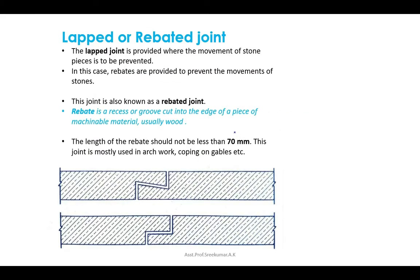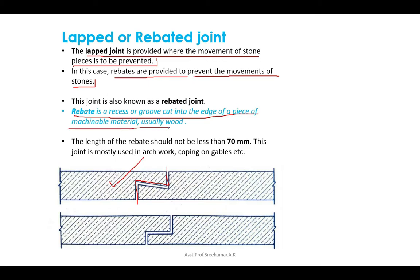The lab or rebated joint is provided where the movement of stone pieces is to be prevented. Rebates are provided to prevent the movement of the stone. A rebate is a recess or groove cut into the edge of a piece of material. The length of the rebate should not be less than 70 mm. This joint is mostly used in archwork, coping on gables, etc.